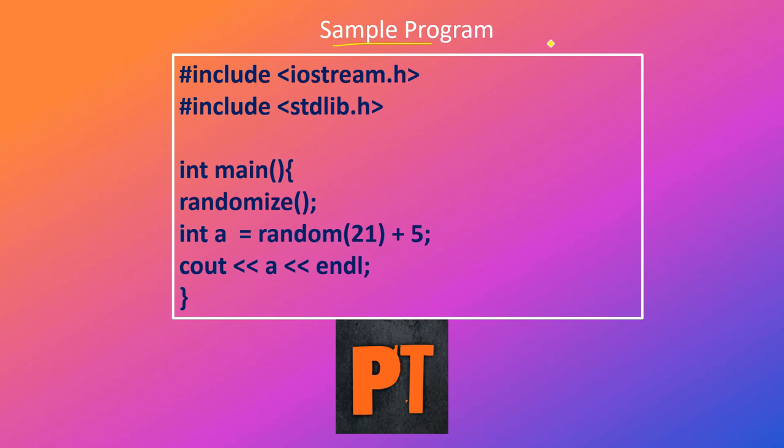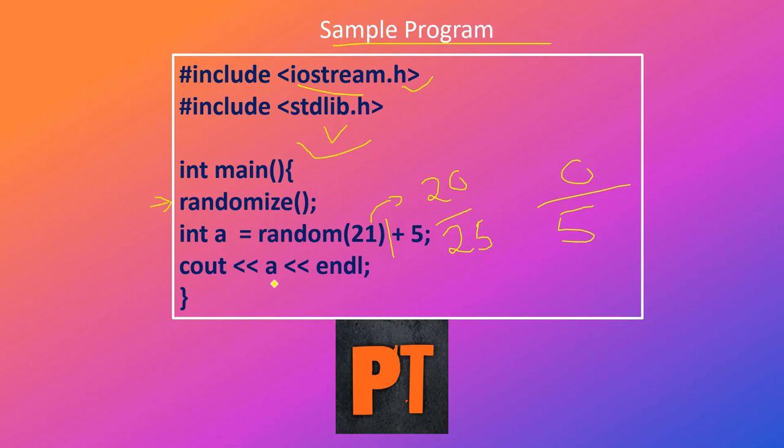This is a sample program: #include iostream.h, #include stdlib.h. In int main, open the randomize function. int a = random(21) + 5. So upper limit is 20 plus 5 equals 25, lower limit is 0 plus 5 equals 5. So the range of a is 5 to 25.